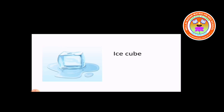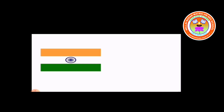What is this? This is an ice cube. Is it 2D or 3D shape? Yes, 3D shape. Third one — what is this? This is a national flag. Is it 2D or 3D shape? Very good children, this is a 2D shape.